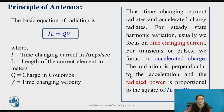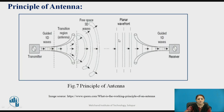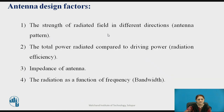Thus, time-changing current radiates and accelerated charge also radiates. For steady-state harmonic variation, we focus on time-changing current, and for transient cases, we focus on accelerated charge. The radiated power is proportional to the square of I-dot times L or Q times V-dot. When designing an antenna, the following factors are considered: the strength of the radiated field in different directions, the total power radiated compared with the driving power, the impedance of the antenna, and the frequency range — also known as the bandwidth.